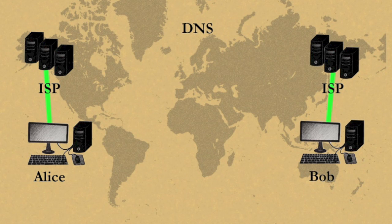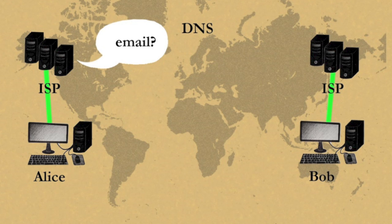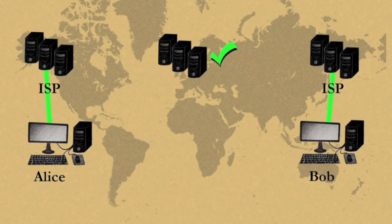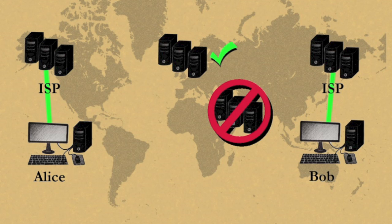When you type in a web address or click on a link, you are asking for the location of the computers that store the information you want. Usually you get the address for the site you want. In some places, censors control this system and will tell you that the site you want doesn't exist or is forbidden.